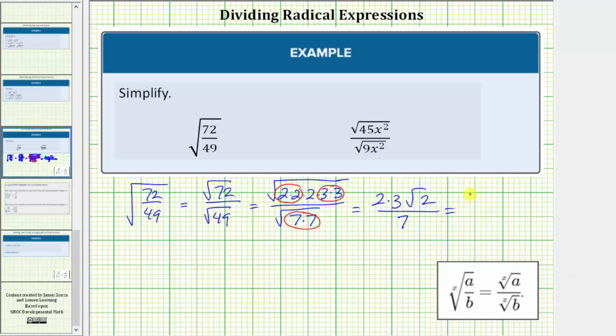So this simplifies to six square root two divided by seven, which is considered simplified because there's no square root in the denominator or a fraction under the square root. However, sometimes we'll see this written as six sevenths square root two. Either form is correct.